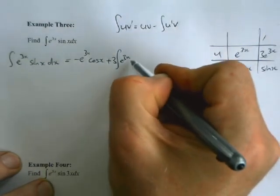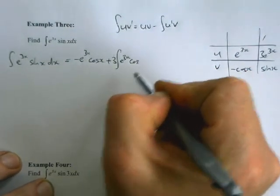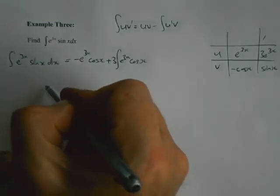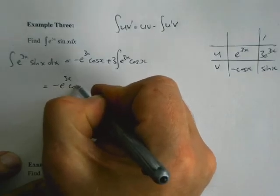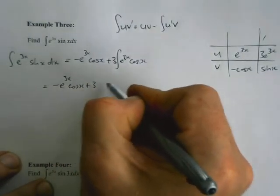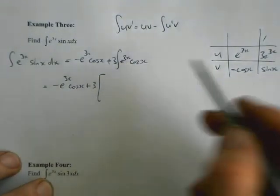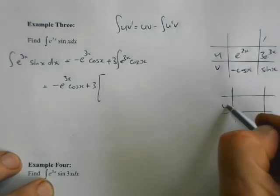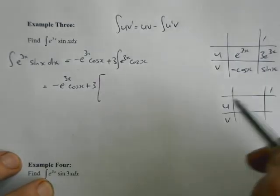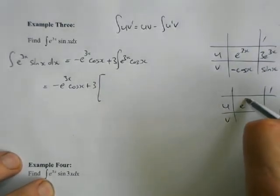V' must be sine x, and if we integrate sine x we come back to negative cos x. So this whole thing is equal to u times v, which means negative e to the 3x cos x, minus the integral of u' times v.